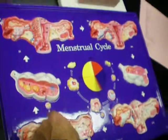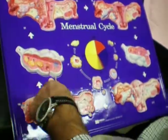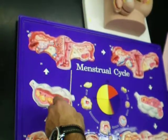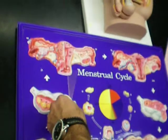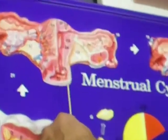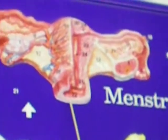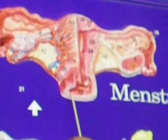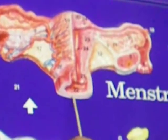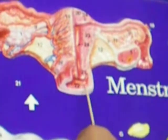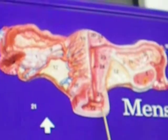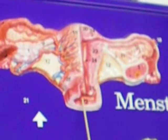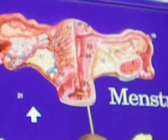This video covers ovarian and follicular development. Starting with the parts of the female reproductive system, here you have the vagina. This is a muscular tube, and it leads to the cervical cap of the uterus.